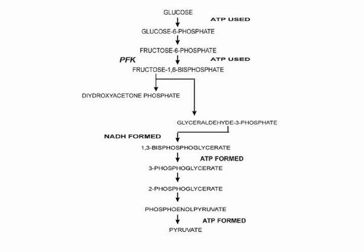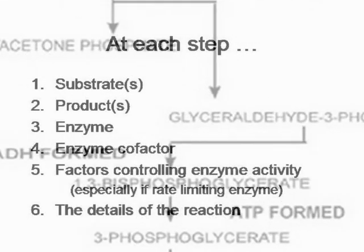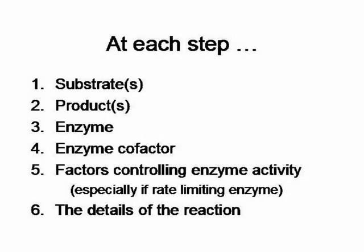We can divide the glycolysis pathway into ten steps, and in this lecture we will look at each of these steps individually. It's convenient to examine each step under six headings: first, the substrate or substrates that react; second, the products of the reaction; third, the enzyme that catalyzes the reaction — most but not all steps are enzyme-catalyzed; fourth, any cofactors used; fifth, factors controlling the activity of the enzyme, especially if it is a rate-limiting enzyme for the pathway as a whole.